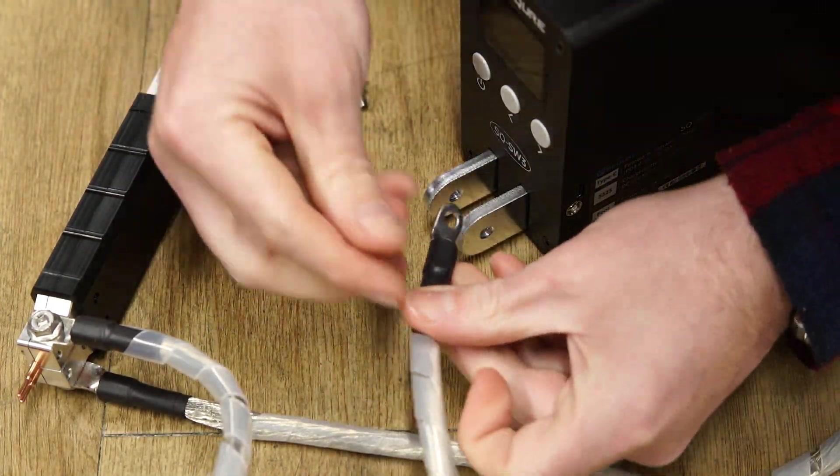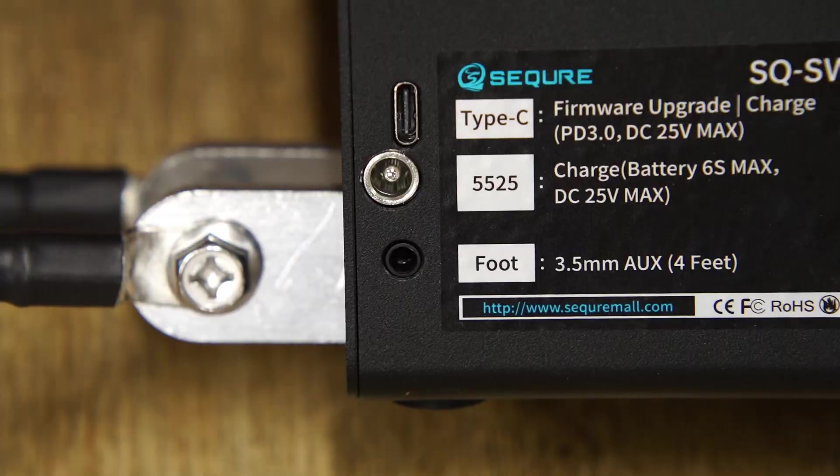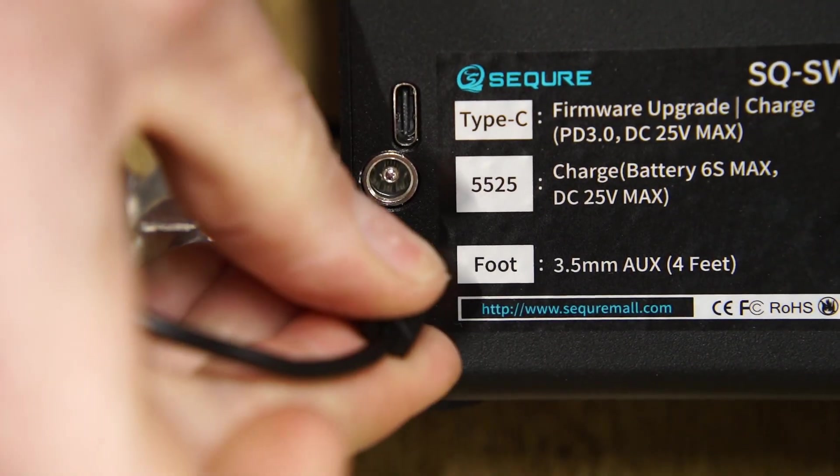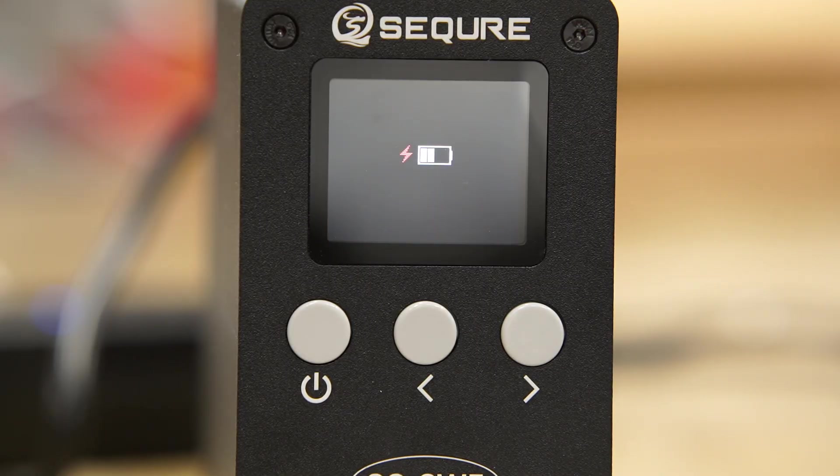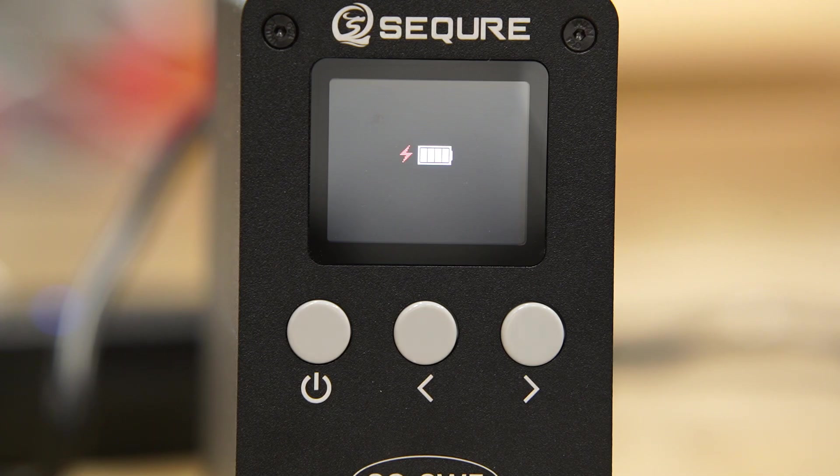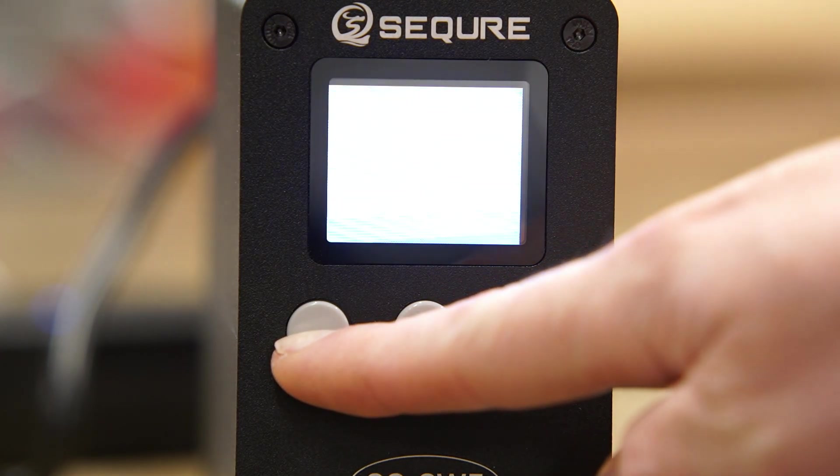Alright let's connect everything up and power up the spot welder. When you first power up the unit it may take two to five minutes to fully charge. After that the unit seems to quickly recharge after each weld.